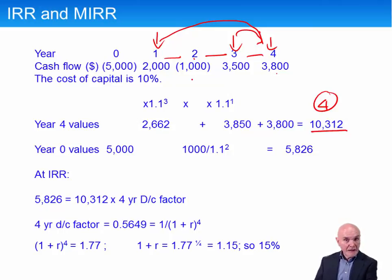The outflows we bring back, we discount those back to time 0. The 5,000 at time 0 is already at time 0. So we just need to bring this one back by two years. Discount this by two years at 10%. And the factor there, it'll be 1,000 divided by 1.1 divided by 1.1, discounted to two years at 10%. This comes to 5826. This is your negative flow. This is your positive flow.